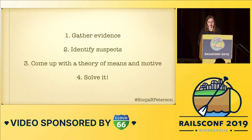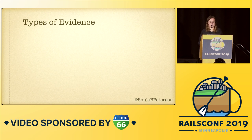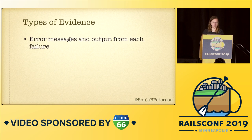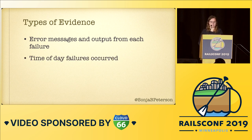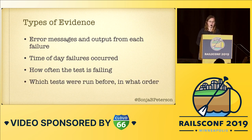That's the framework I'm going to use in this talk for explaining how to fix flaky tests. Let's start with step one: gathering evidence. There are lots of pieces of information that can be helpful when diagnosing and fixing a flaky test. Some of those include error messages and output for every time you've seen it fail, the time of day those failures occurred, how often the test is failing — is it failing every other time or just once in a blue moon — and which tests were run before the failing test and in what order.